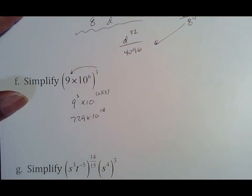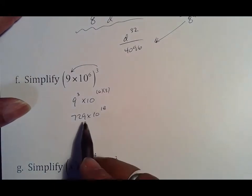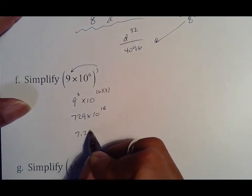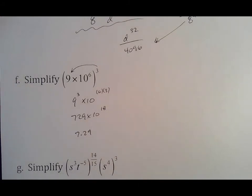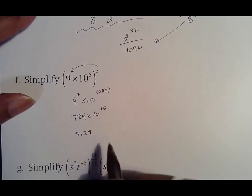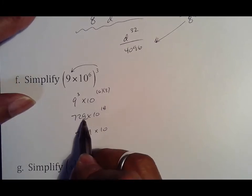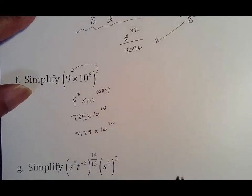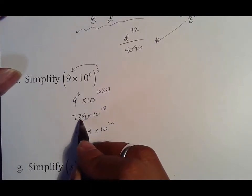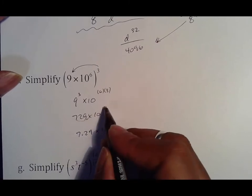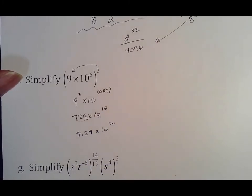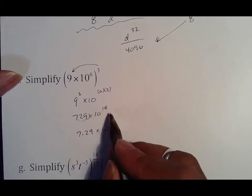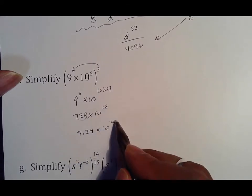That makes this 9 to the 3rd, which is 729, times 10 to the 18th. This is where what I talked about in the last lesson helps. The decimal is not behind the first digit, it needs to be 7.29, but notice it moved two spots. So whatever way I shift this, 18 has to go two digits because I moved it two spots. This was 700, it is now 7. That got smaller, 18 should get bigger by 2, which makes it 20.